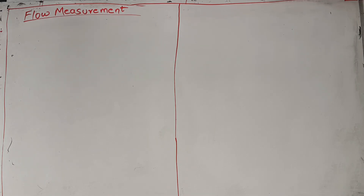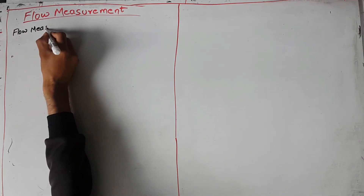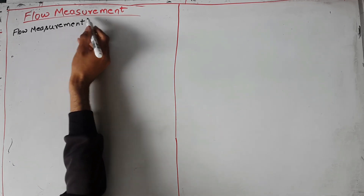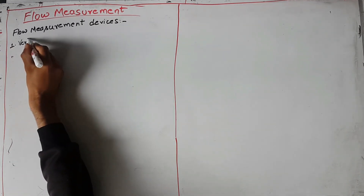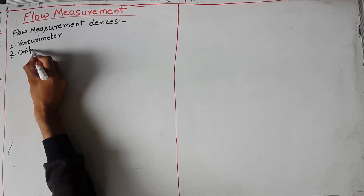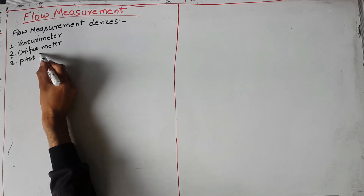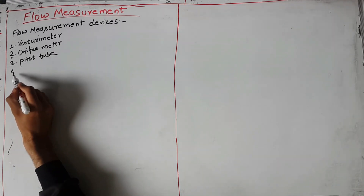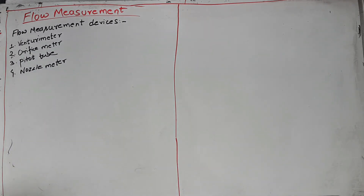Today we start with flow measurement. What is flow measurement? How can we measure the flow of a flowing fluid? The flow measurement devices are: number one, venturimeter; number two, orifice meter; number three, pitot tube; and we have other devices also — nozzle meter, or simply a reducer. We will study about venturimeter, orifice meter, and pitot tube in detail.